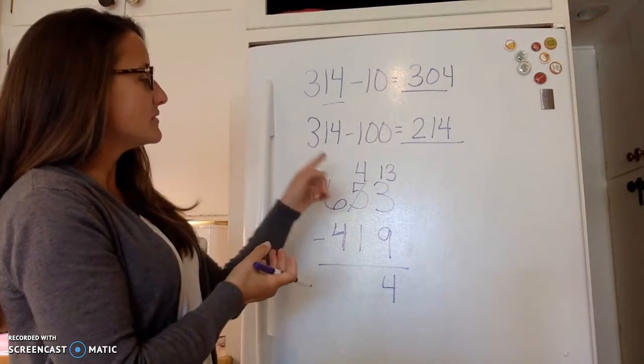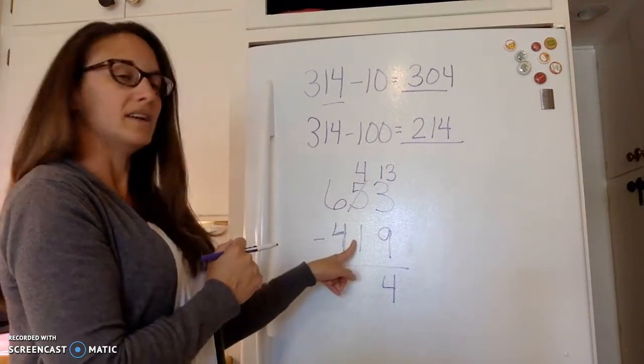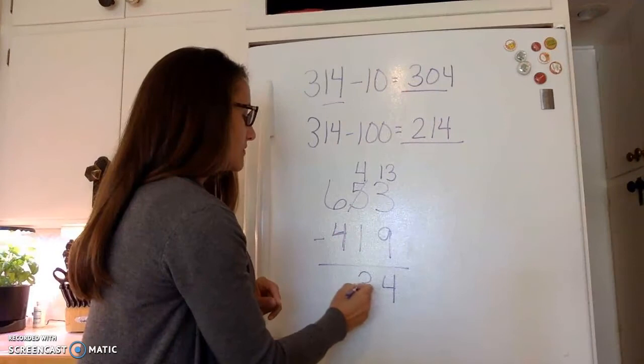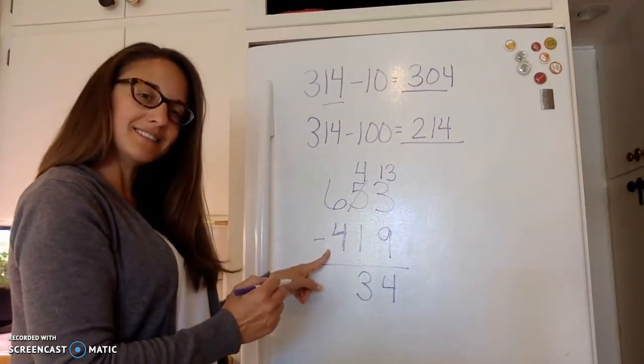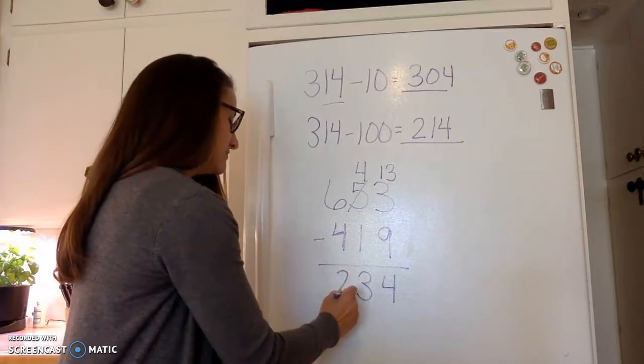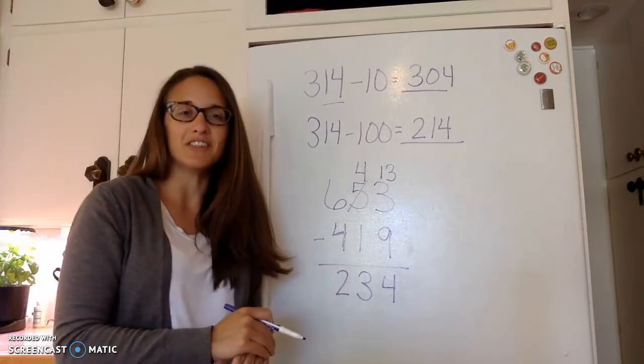Okay then let's go over here to our ten spot. Four minus one. Does that make sense? Three. Six minus four. Does that make sense? Two. So your answer is 234.